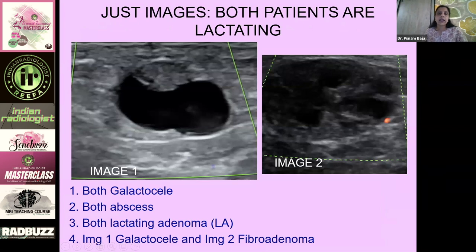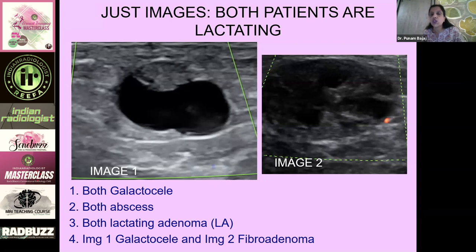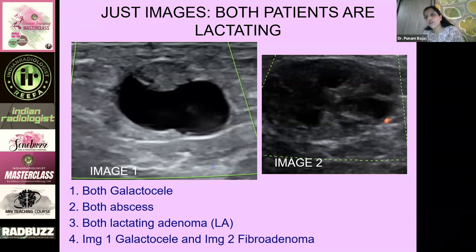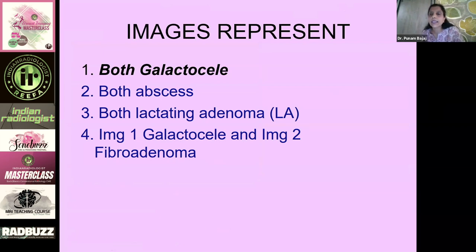Next case: two separate lactating patients, two separate images. Options are: both are galactoceles, both are abscesses, both are lactating adenomas, or image one is a galactocele and image two is a fibroadenoma. Most people think the first image is a galactocele but the second is a fibroadenoma — about 30% feel both are galactoceles.